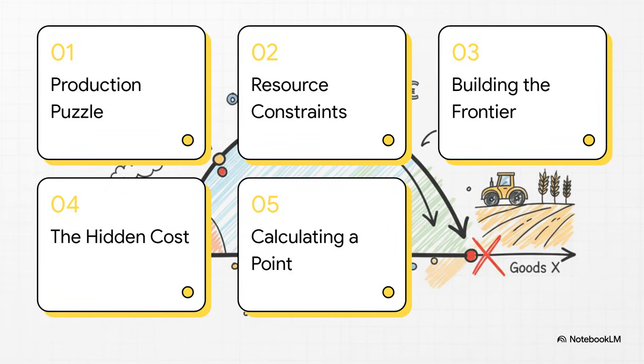So here's how we're going to break it down. We'll start with the puzzle itself, then look at the resource constraints. After that, we'll build the economic frontier, uncover a pretty surprising hidden cost, and finally, we'll run the numbers on a specific point in our model.